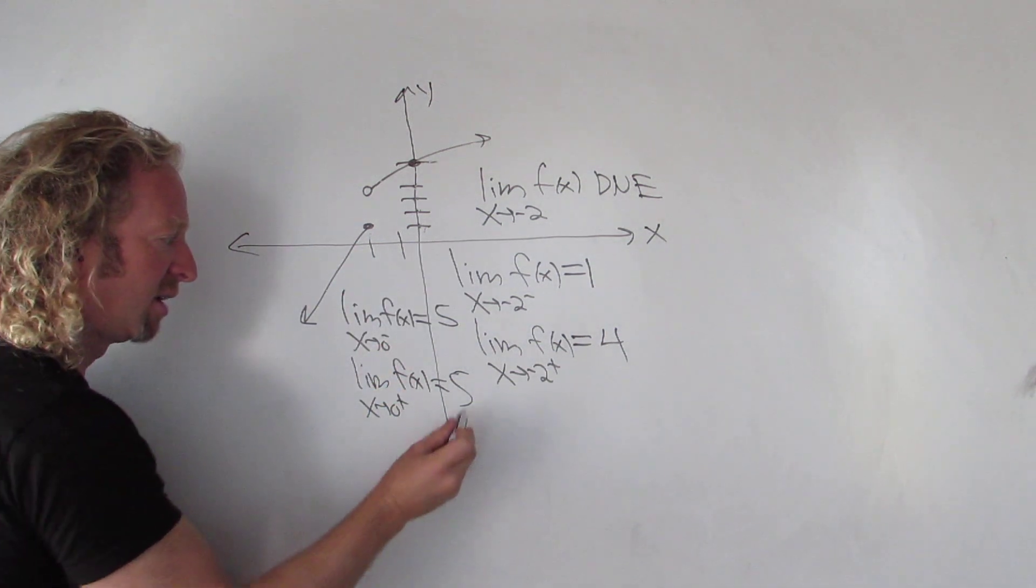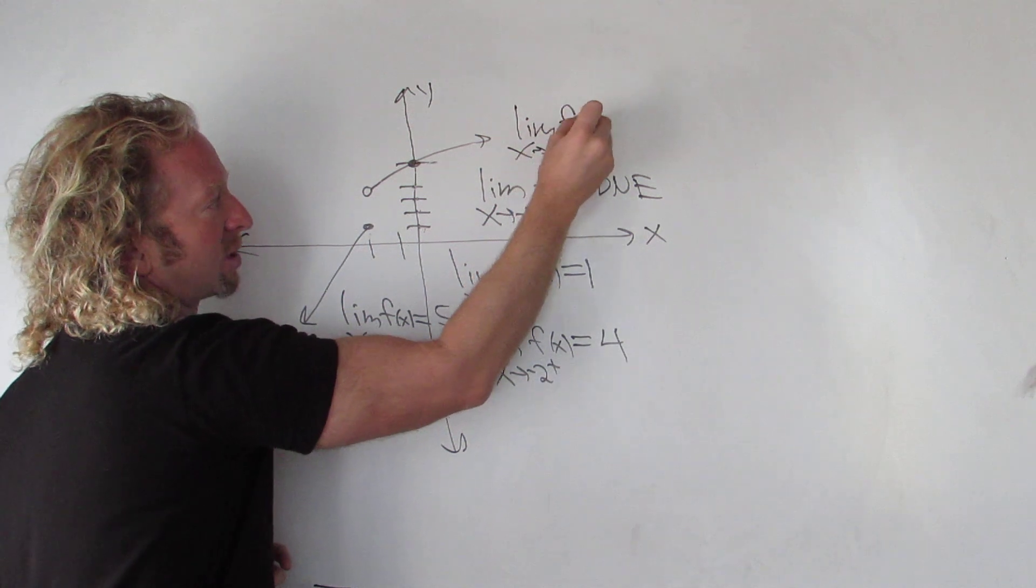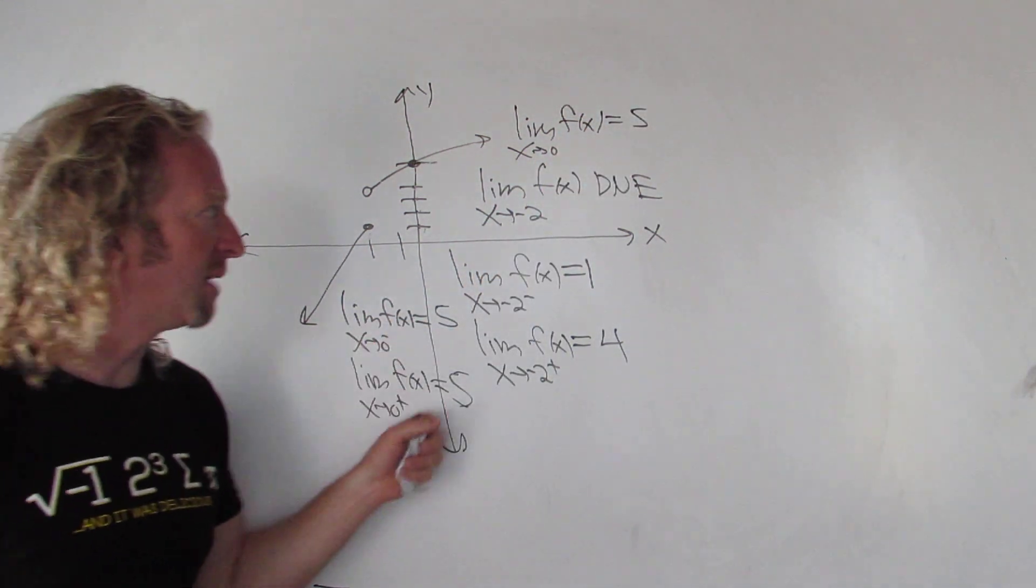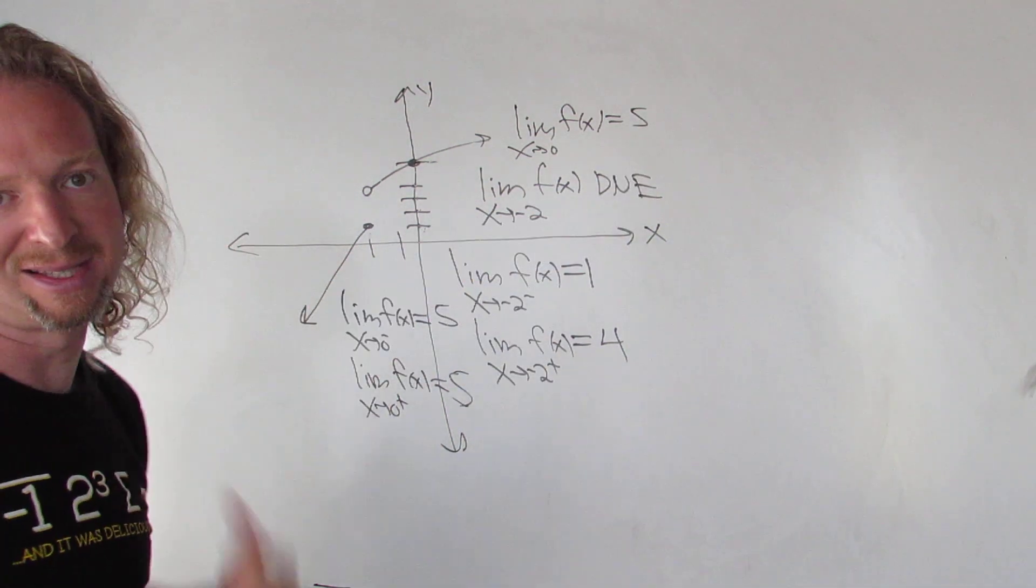Therefore, the limit is 5. So if you take the regular limit, I'll write it up here. As x approaches 0, you get 5. So both one-sided limits have to be the same. Therefore, the limit is also the same. If they're different, then we say the limit does not exist.